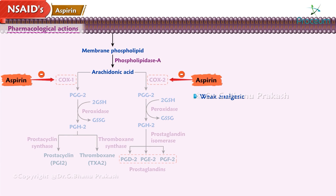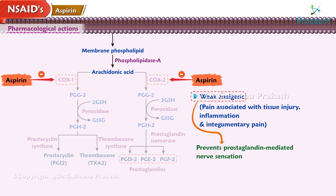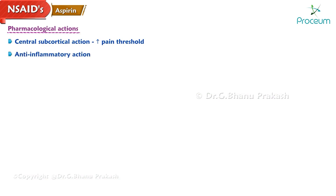Pharmacological actions: Aspirin is a weak analgesic. Pain associated with tissue injury, inflammation, and integumentary pain is mediated by preventing prostaglandin-mediated nerve sensation and decreasing pain perception at peripheral pain receptors. It also has a central subcortical action which increases the pain threshold. It has anti-inflammatory action at high doses.